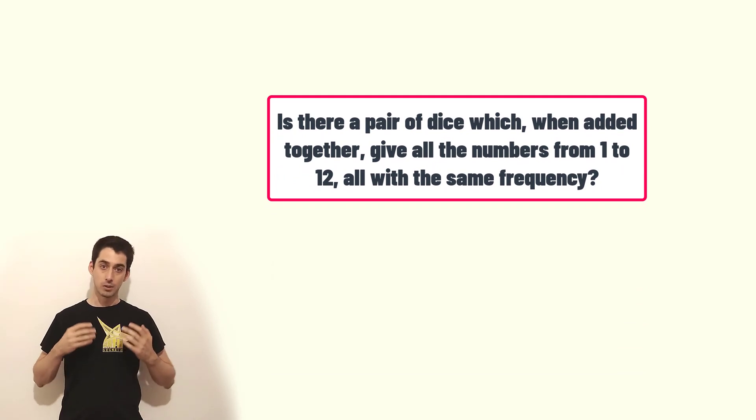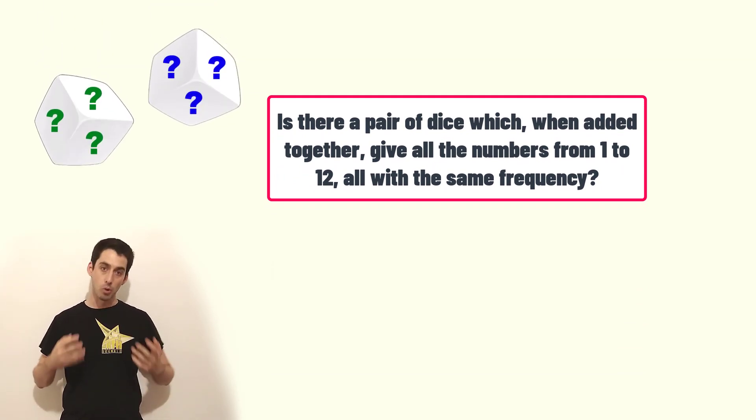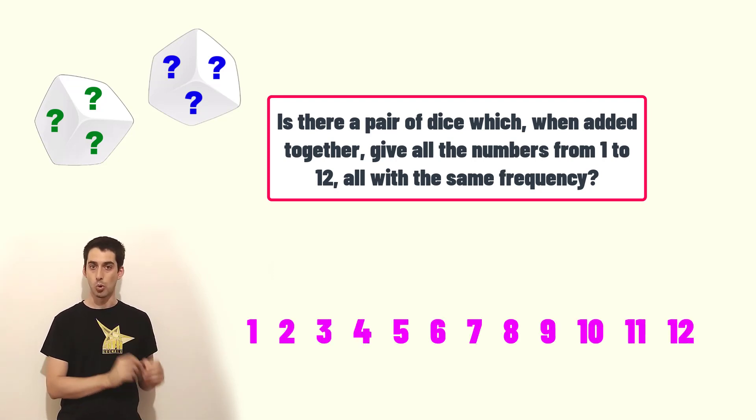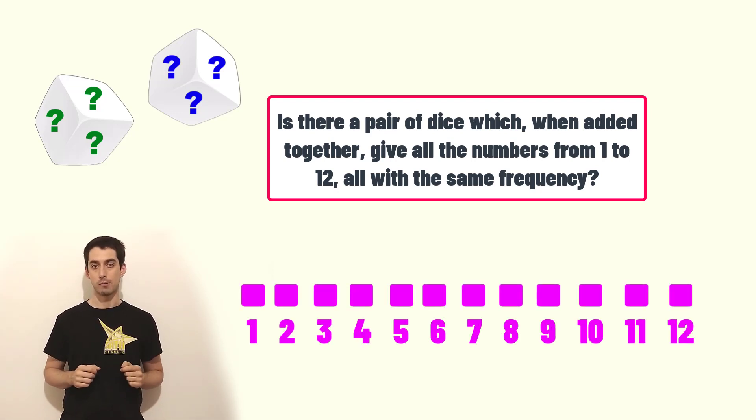If you like this problem we have another challenge for you. Try to find two dice such that when you roll them and when you add the results together you get all the numbers from 1 to 12 all with the same frequencies.